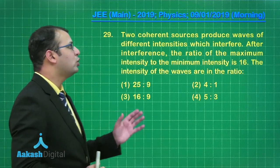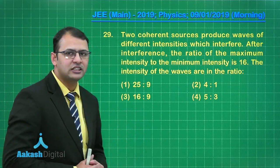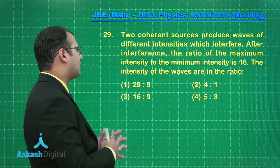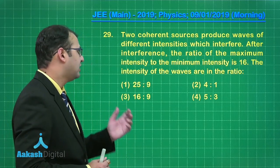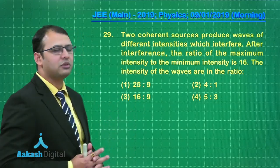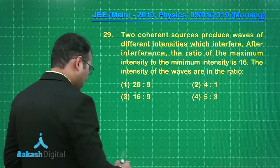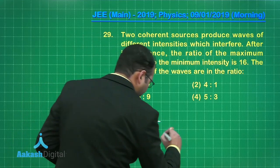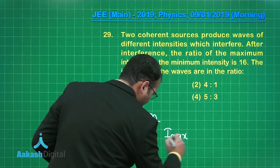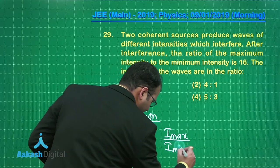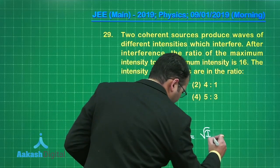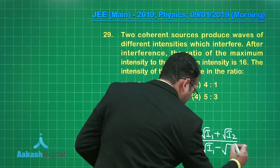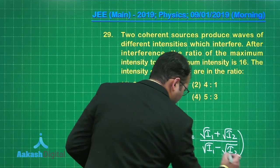Now in this question, there are two coherent sources who produces wave of different intensities which interfere. This belongs to optics. And after interference, the ratio of the maximum intensity to minimum intensity is 16. The intensity of the waves are in the ratio. So maximum to minimum ratio has been given to you. So let's see the solution. So maximum intensity to minimum intensity is given as root of I1 plus root of I2 divided by root of I1 minus root of I2 whole square, right?